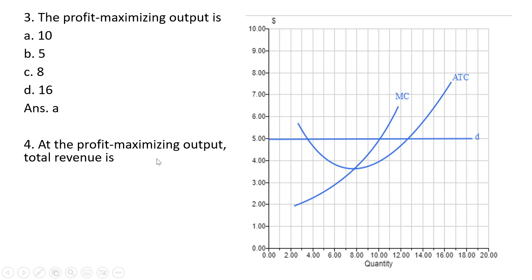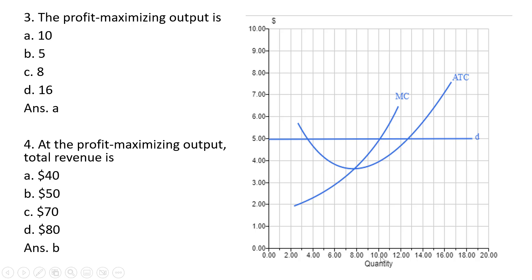At the profit-maximizing output, total revenue is: we found the firm will produce 10 units, where marginal cost intersects the demand curve. Producing and selling 10 units at $5 each, 5 times 10 gives us total revenue of $50. Answer choice B. It's price times quantity, where quantity is determined by the marginal cost curve intersecting the price line.